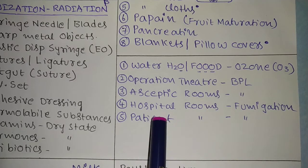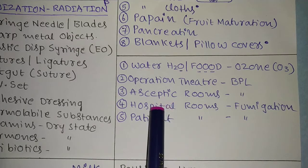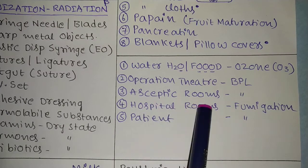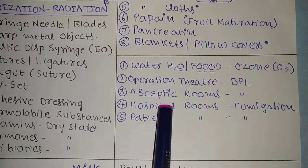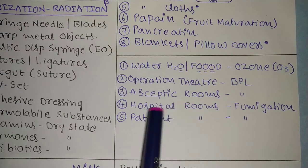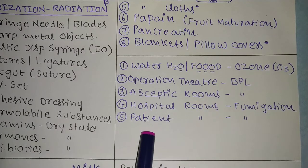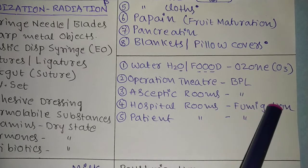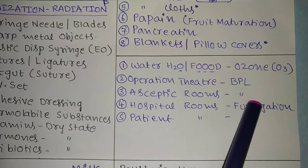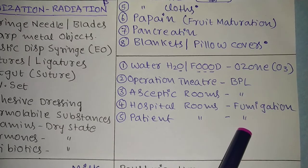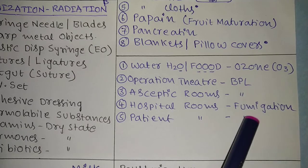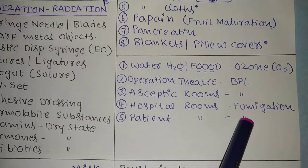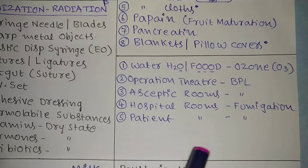Don't confuse operation theaters with hospital rooms and patient rooms. Hospital rooms and patient rooms — where patients or office staff may be present, like record rooms — require fumigation. Formaldehyde is used for the fumigation process, which is a very powerful virucidal and bactericidal method.